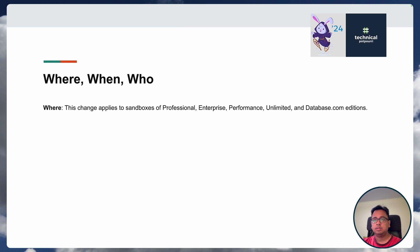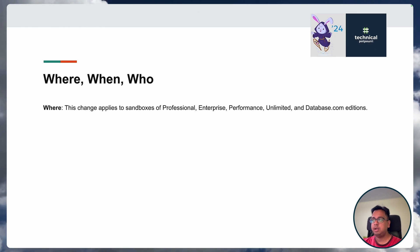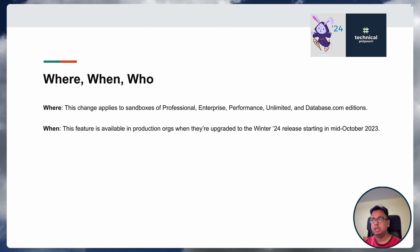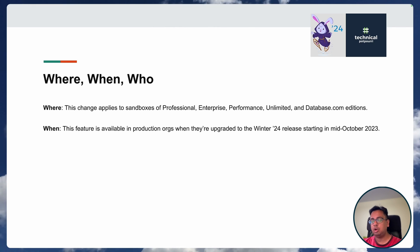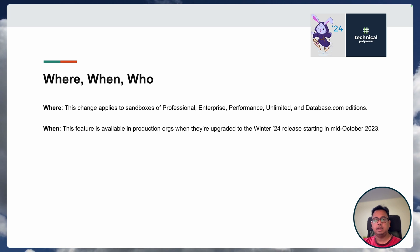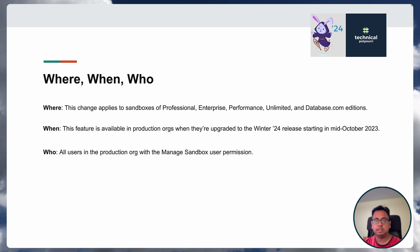Let's understand when it's coming and where it applies. This change applies to sandboxes of Professional, Enterprise, Performance, Unlimited, and Database.com editions. So if your production org is one of these types, any sandbox created from that production org will have this feature. This feature will be available in your production org when it is upgraded to the Winter 24 release, starting around mid-October 2023. All users in the production org with the Manage Sandbox user permission can use this feature.